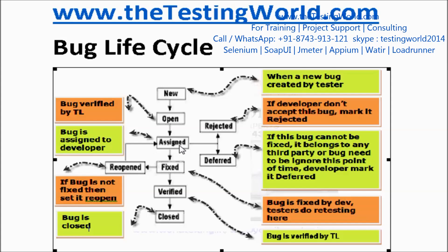So after 'Assigned', there could be three statuses: 'Rejected', 'Deferred', or the third case where the developer works on the bug and fixes it. Once the bug is fixed, the developer sets the status to 'Fixed'.